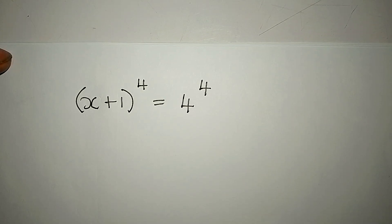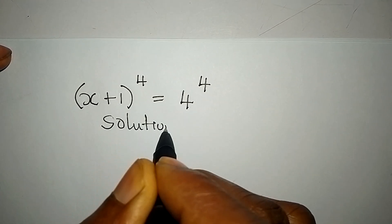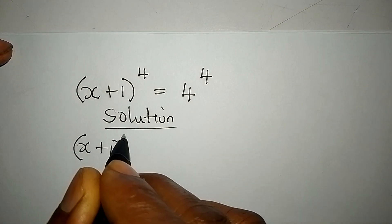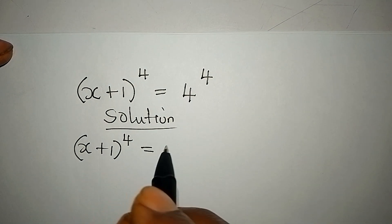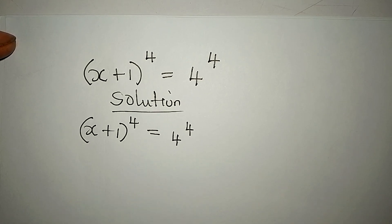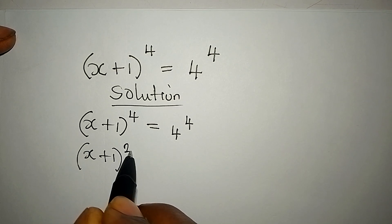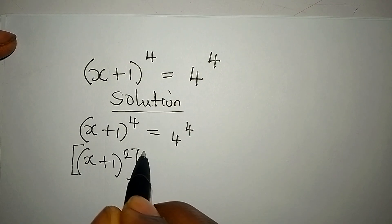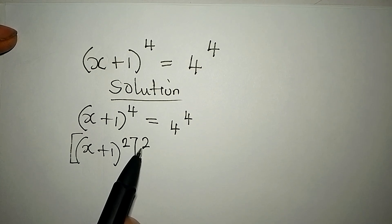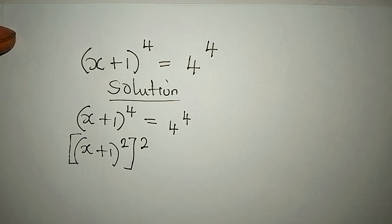Hello everyone, let's provide the solution to this problem very quickly. We have (x+1) to the power of 4 equal to 4 to the power of 4. Now, if I break the power here into 2, I will have (x+1) to the power of 2, then to the power of 2, because two powers like this can always multiply to give 4.